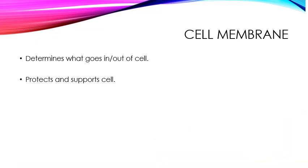We'll start with the outer ring, the cell membrane. This determines what goes in and out of the cell. It also offers protection and support.